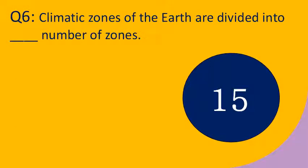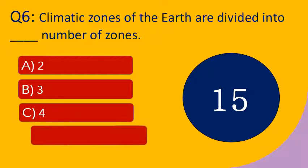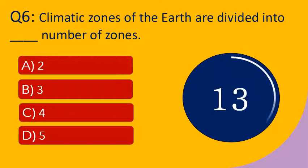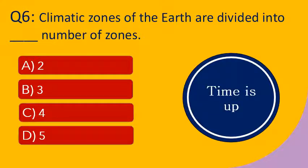Question number 6: Climatic zones of the earth are divided into dash number of zones. Options are A. 2, B. 3, C. 4, and D. 5. Your time starts now. Your time is up. The right answer is 3. Climatic zones of the earth are divided into 3 zones.